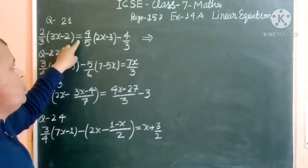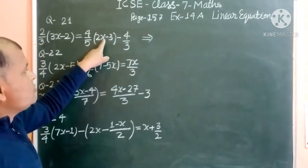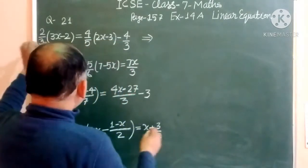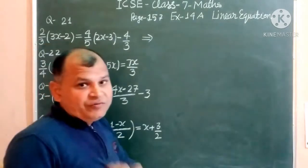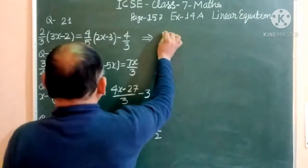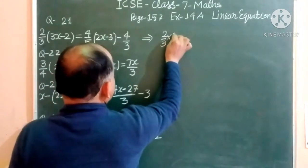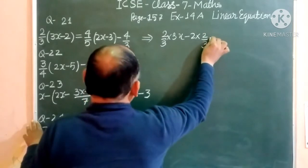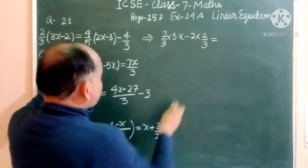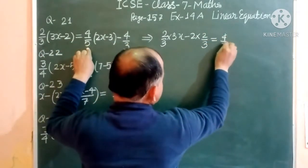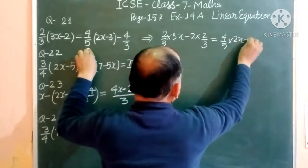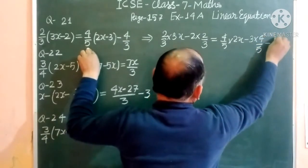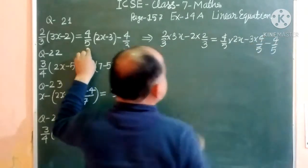Question 21 is: (2/3)(3x - 2) = (4/5)(2x - 3) - 4/3. We multiply 2/3 by the bracket using the distributive law: (2/3)(3x) - (2/3)(2) = (4/5)(2x) - (4/5)(3) - 4/3.